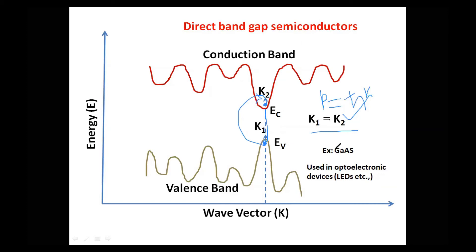An example of such a material is gallium arsenide (GaAs). These semiconductors are used in optoelectronic devices such as LEDs and solar cells. The basic application of direct bandgap semiconductors is in optoelectronic devices.